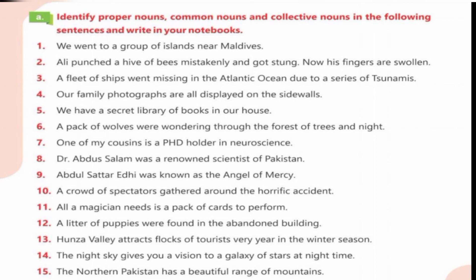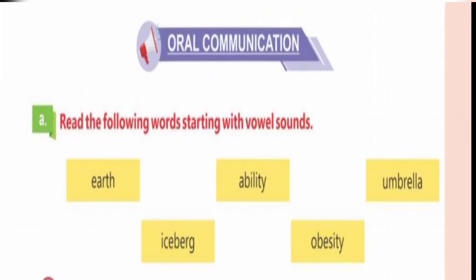The night sky is a proper noun. The northern Pakistan has a beautiful range of mountains. 'Range of mountains' is a collective noun and 'northern Pakistan' is a proper noun.